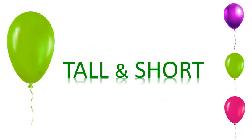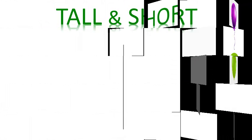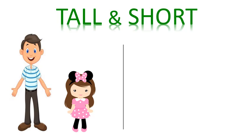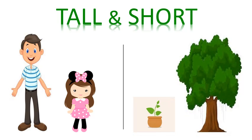Our next concept is tall and short. Can you see a father and a daughter? Yes, a father is tall, the girl is short. Can you see a plant and a tree? Yes, a tree is tall and the plant is short.